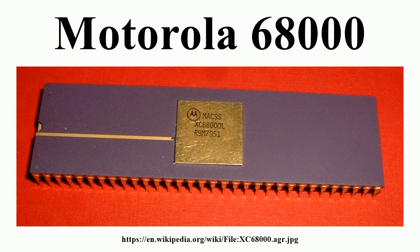Motorola replaced the MC68000 with the MC68HC-001 in 1990. This chip resembled the 68HC-000 in most respects, but its data bus could operate in either 16-bit or 8-bit mode, depending on the value of an input pin at reset. Thus, like the 68008, it could be used in systems with cheaper 8-bit memories. The later evolution of the 68000 focused on more modern embedded control applications and on-chip peripherals.